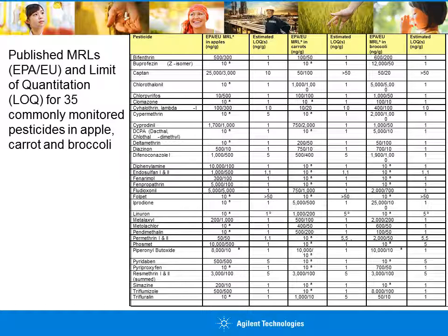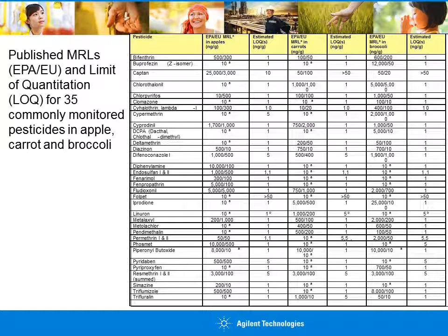Folpet yielded estimated LOQs greater than 50 ng/g for all three matrices, which is above the established MRLs. The ability to use a smaller sample size — the 2-gram QuEChERS extraction — equates to less volume of labeled analytes spiked into the samples and therefore a substantial reduction in cost per sample. Additional labeled compounds such as Captan-D6 and Folpet-D4 could be easily included without significant cost increases, improving recovery and reliability. With the smaller sample size, the cost of spiked Captan-D6 and Folpet-D4 would be 4 cents per sample, versus 40 cents per sample with a 10–15 gram sample size — a ten-fold cost savings.